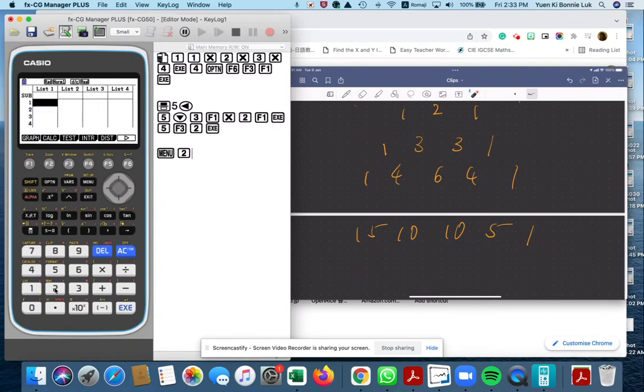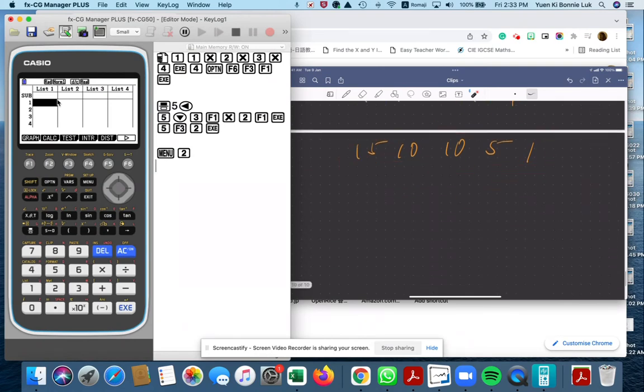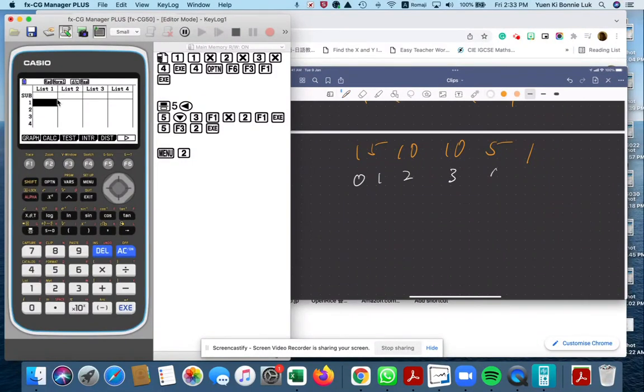So what we're going to do is in list one we're going to type in the - because we want the fifth row, right? So for the fifth row, the nCr will be counting from zero, one, two, three, four, five. This is the counting.